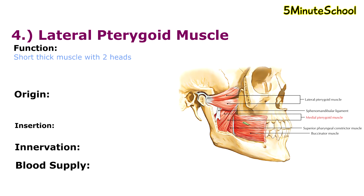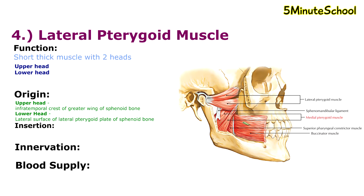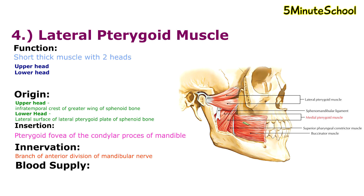The lateral pterygoid muscle is a short, thick muscle with two heads: the upper and lower head. The upper head arises from the infratemporal surface and the infratemporal crest of the greater wing of the sphenoid bone. The lower head arises from the lateral surface of the lateral pterygoid plate of the sphenoid bone. The muscle fibers converge inferiorly and form a tendon that inserts into the pterygoid fovea of the neck of the condylar process of the mandible. It is supplied by a branch of the anterior division of the mandibular nerve, and its blood supply comes from the pterygoid branch of the second part of the maxillary artery.